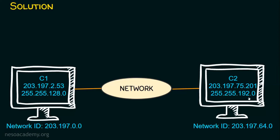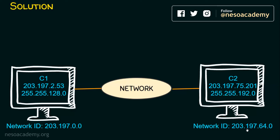When we analyze it, C1's network address and C2's network address are different, so we can clearly say C1 and C2 are not belonging to the same network. But what C1 thinks about C2 and what C2 thinks about C1 is the real question. Suppose C1 wants to ping C2 — how can it be done?